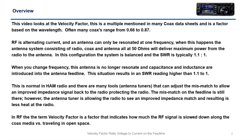This is normal in ham radio and there are many tools — antenna tuners, for example — that can adjust the mismatch to allow for improved impedance seen by the radio, protecting it. The mismatch on the feed line is still there; however, the antenna tuner is allowing the radio to see an improved impedance match, resulting in less heat.